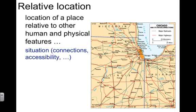Looking at the map of Chicago, you can see all the connections — all the railroads, all the highways leading to Chicago — and the accessibility it has with multiple states and multiple areas. One thing to keep in mind: absolute location doesn't change, but relative location may change. That is why throughout history we've seen civilizations come and go, rise and fall.